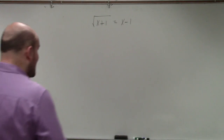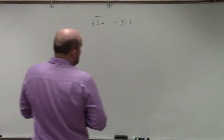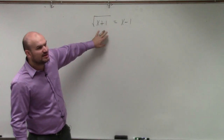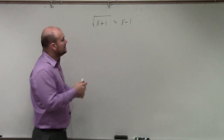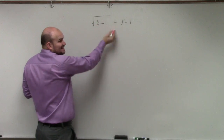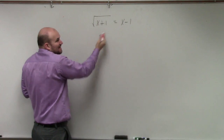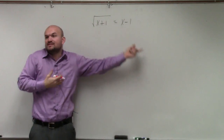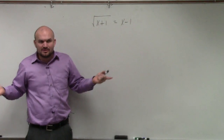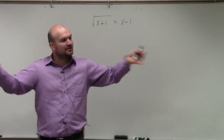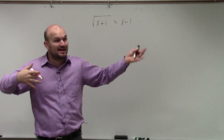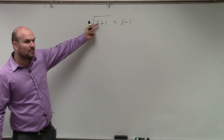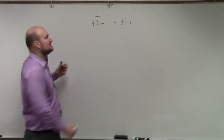Ladies and gentlemen, we have x's on both sides. The main important thing is we want to get rid of the x and get rid of the square root. The first thing I'm going to do — even though we always want to get the x to the same side, we can't combine them because one's under a radical and one's not under the radical.